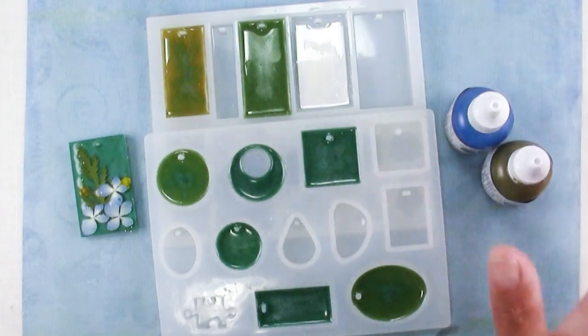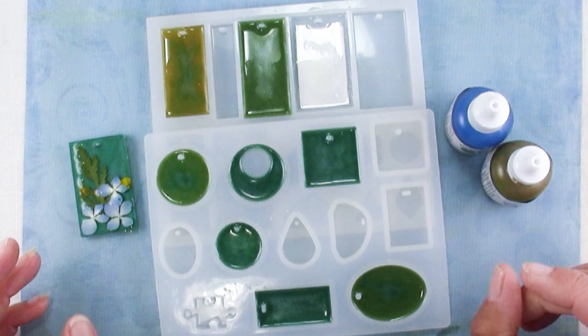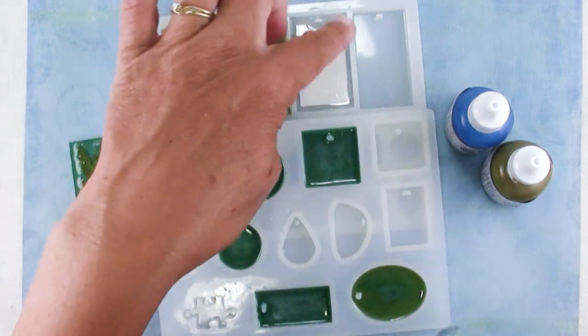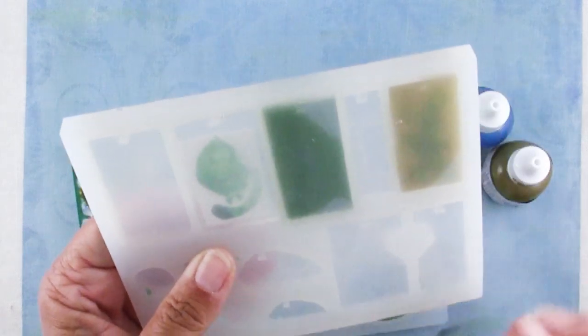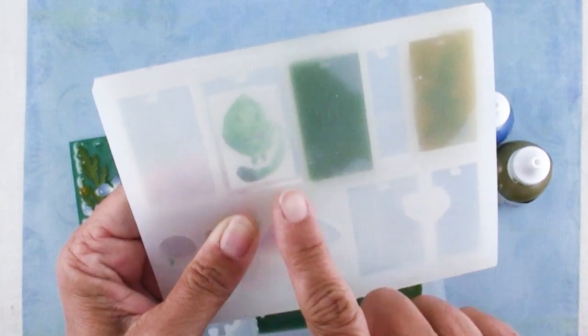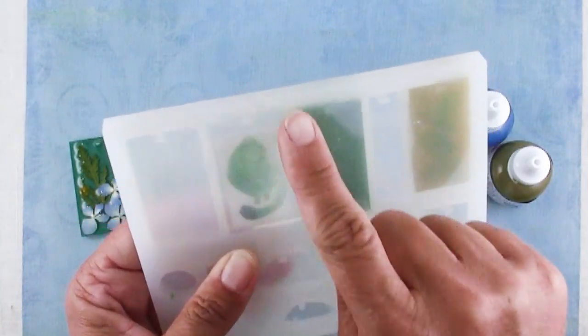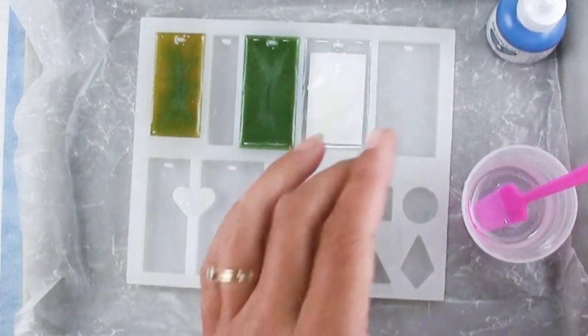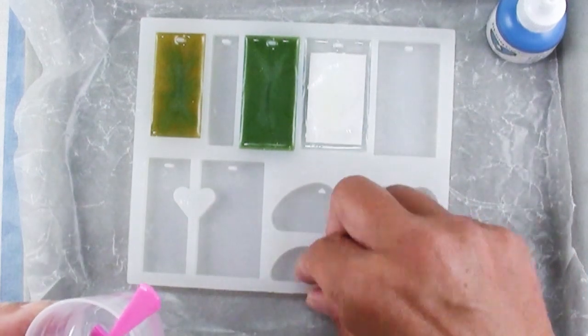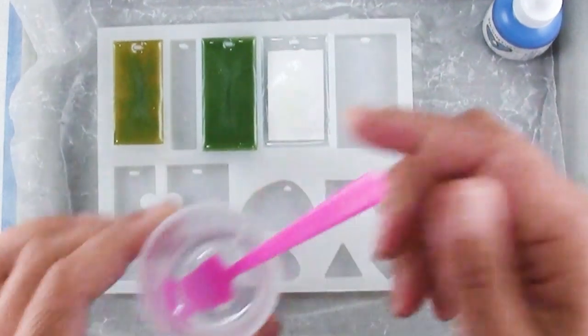Now it's time to mix up another batch of resin and tint that to cover the back of my piece. You can actually get a look at it here. So I will be adding color to the back of it and it will provide a nice frame for the artwork.